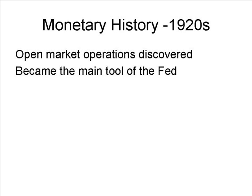In 1923, the Open Market Investment Committee was created. It was replaced by the Open Market Policy Conference in 1930, and that was replaced by the Federal Open Market Committee in 1935 as part of the Banking Act of 1935. That is substantially what today's FOMC is.